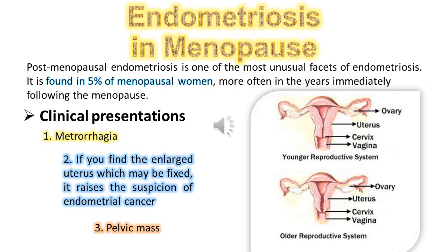Endometriosis in menopause. Post-menopausal endometriosis is one of the most unusual facets of endometriosis. It is found in 5% of menopausal women, more often in the years immediately following menopause. Clinical presentations include metrorrhagia. If an enlarged uterus is found, which may be fixed, it raises the suspicion of endometrial cancer.